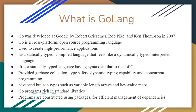What is GoLang? Go was developed at Google by Robert Griesemer, Rob Pike, and Ken Thompson in 2007. Go is a cross-platform, open-source programming language used to create high-performance applications. Go is a very fast, statically typed compiled language that feels like a dynamically typed interpreted language.